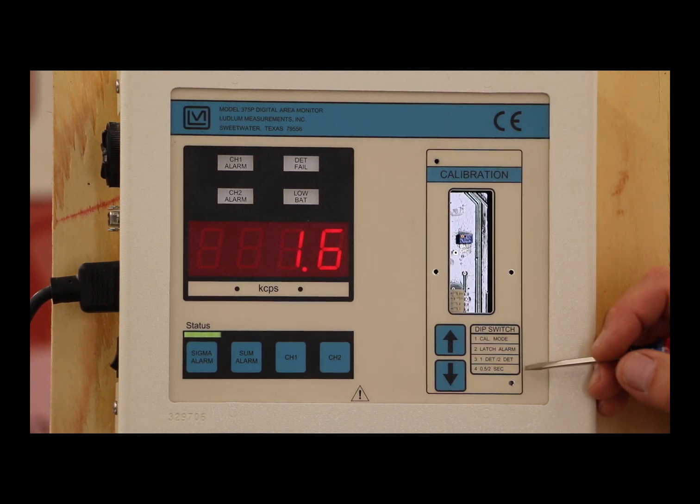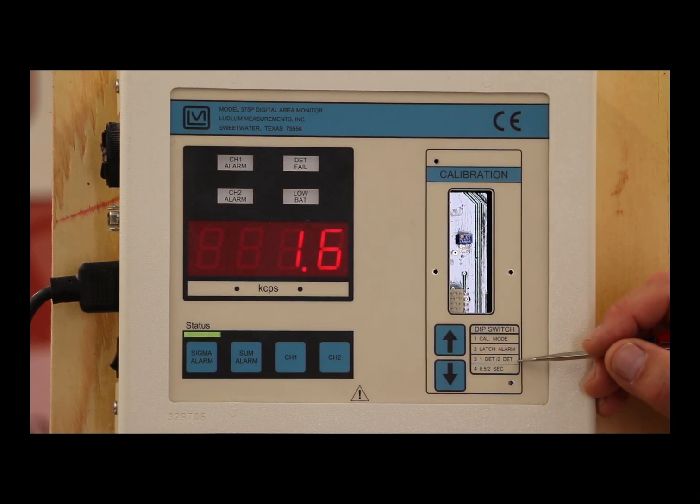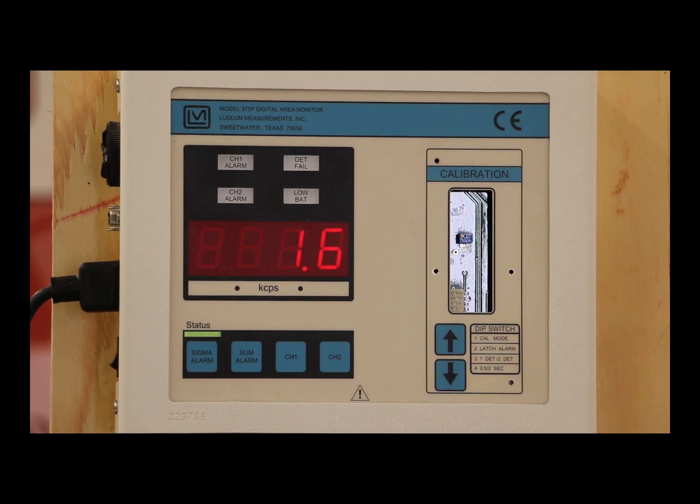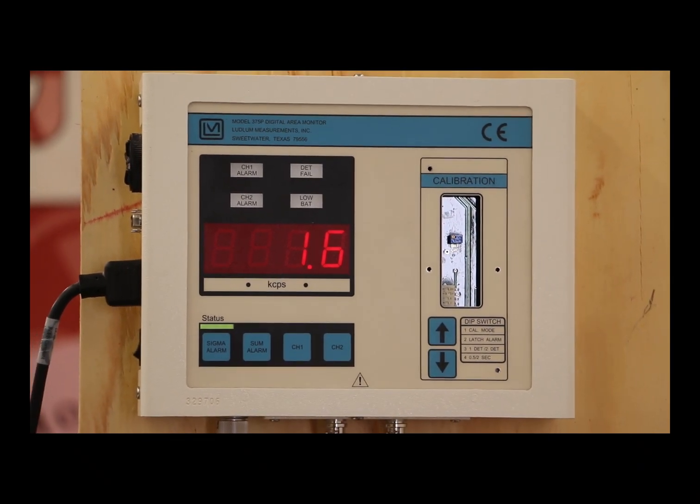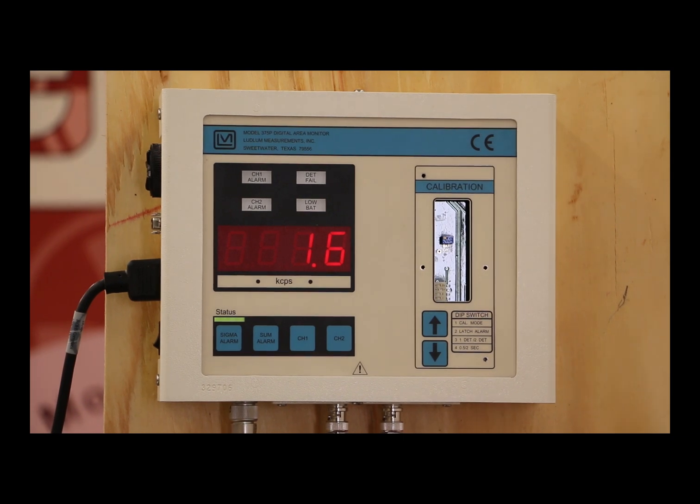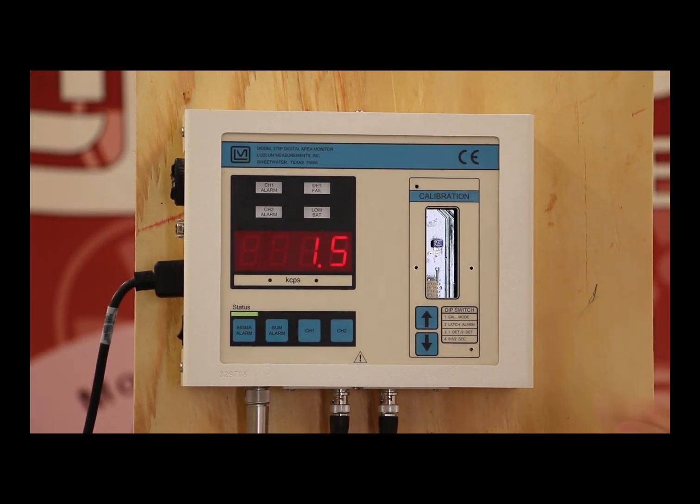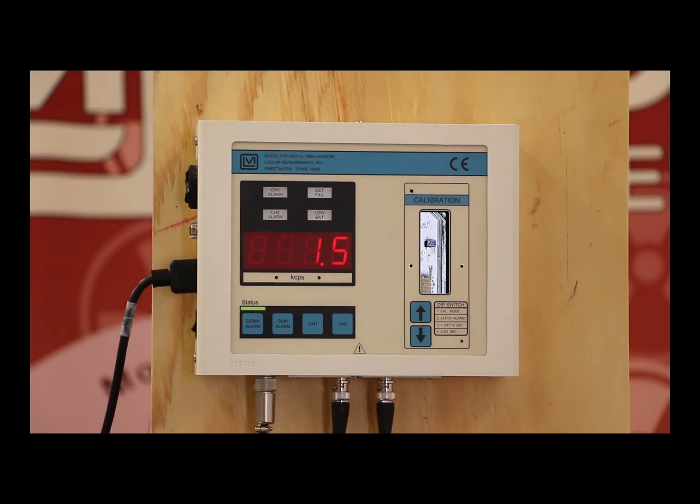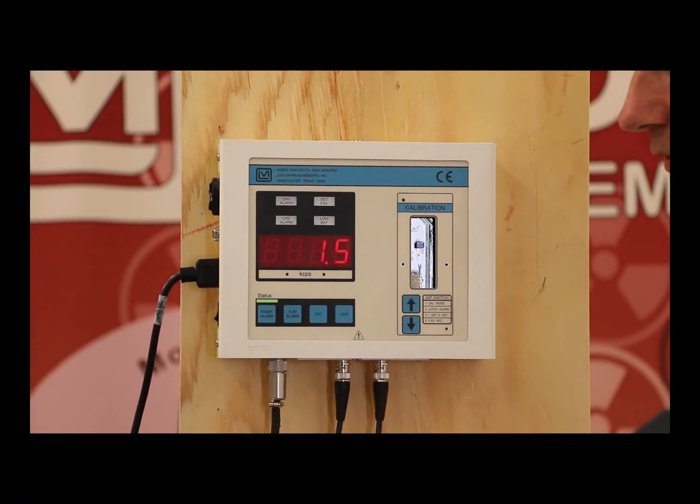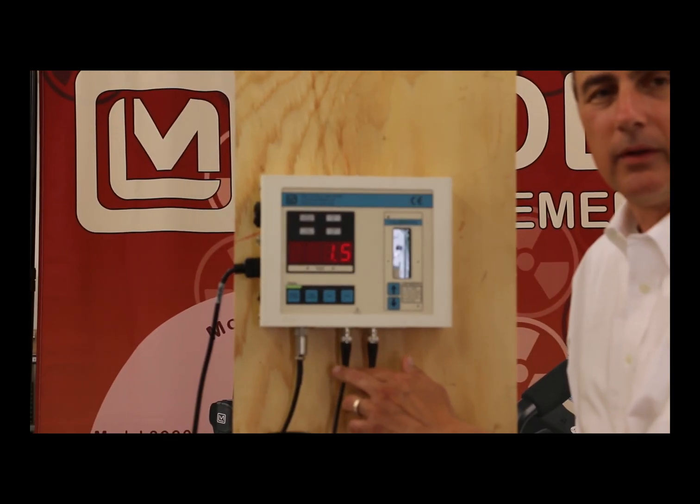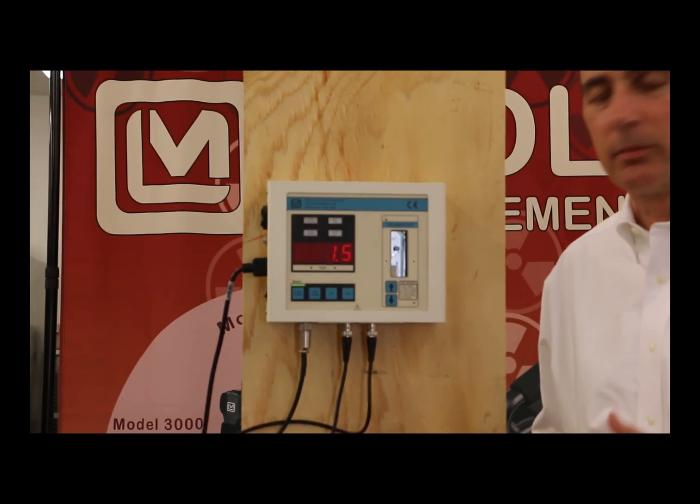The third one down is detectors one and two. What this means is that normally you have two detectors that are operating, feeding into the monitor, but you can have situations where you have a damaged detector or maybe you just have one detector for whatever reason. It can operate with one detector only. When you do that, if you have that situation though, I must tell you that you need to bring the cabling in from that detector into channel one because it expects to see one detector from channel one.